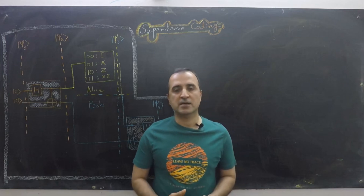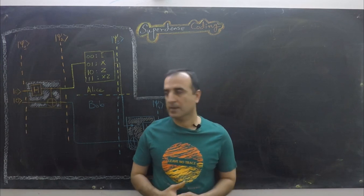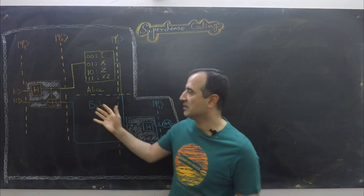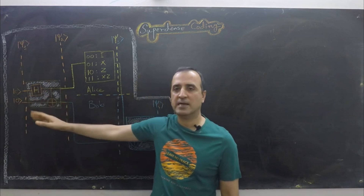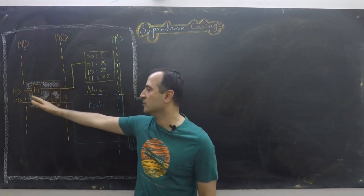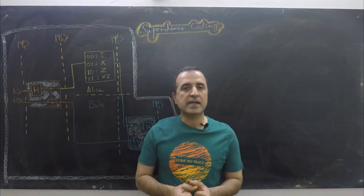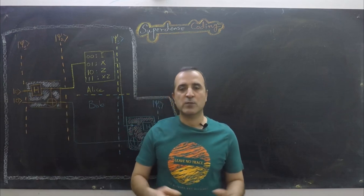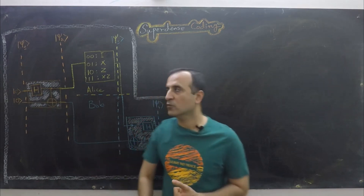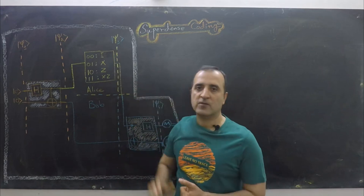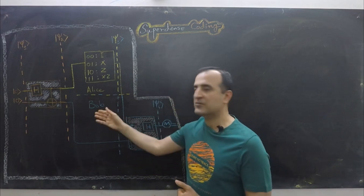The story is like this: there are two parties, say Alice and Bob. First of all Alice and Bob get together and they prepare a Bell state. This circuit here is making a Bell state. Afterwards, when they have the Bell state, Alice takes the first qubit and moves to New York whereas Bob takes the second qubit of the Bell state and moves to San Francisco.